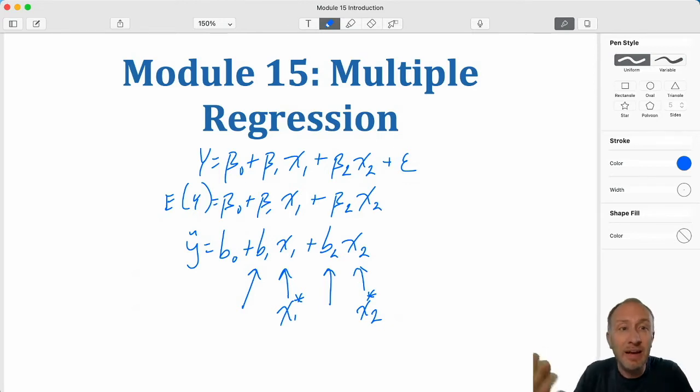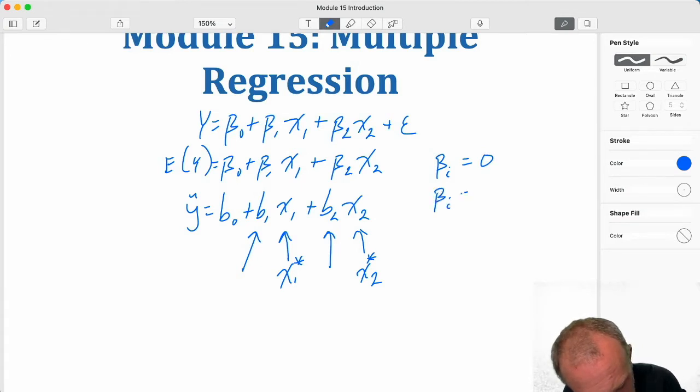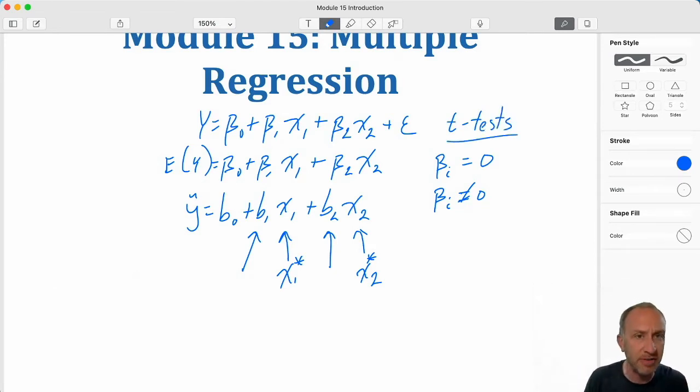Similarly we'll be doing hypothesis testing on the individual parameter significance. So on each one of those coefficients, one at a time, those would be our t-tests, our test for individual parameter significance.